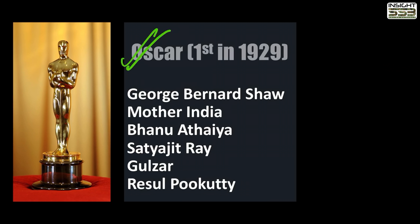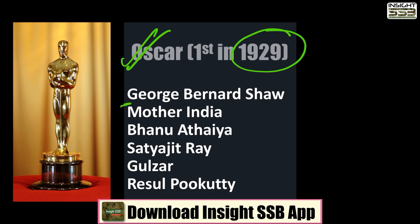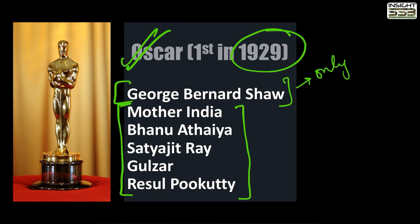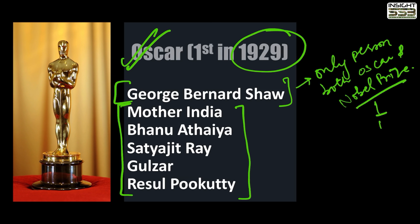Oscars were first given in 1929. The reason this person's name is added is very important — he is the only person who received both an Oscar and the Nobel Prize. He received the Nobel Prize for literature, and the Oscar in 1938 for best screenplay.